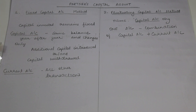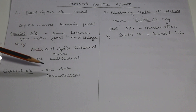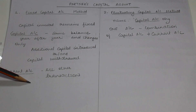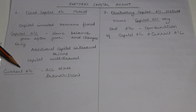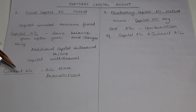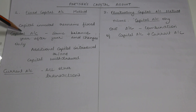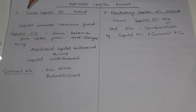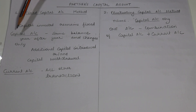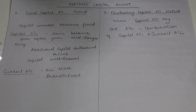In the Current Account, all the other transactions are recorded — for example, interest on capital, salary, commission to the partner, or share of profit. All those transactions will be covered in the Current Account. That is why the Current Account balance can be positive as well as negative — it can have a debit balance or a credit balance. But the Capital Account balance will always be on the credit side. Also, when partners maintain Fixed Capital Account Method, interest on capital is provided on the balance of the Capital Account and not on the Current Account balance.